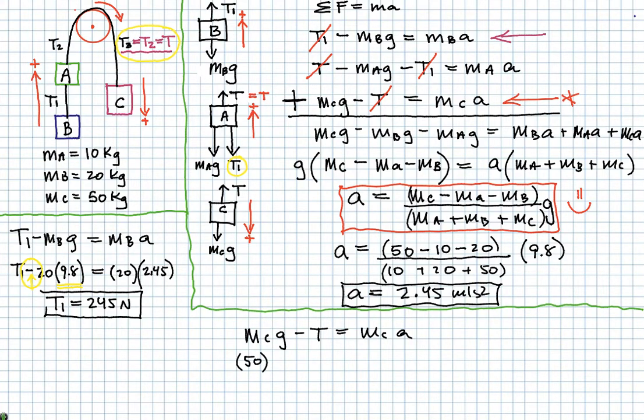50 times 9.8, remember. Okay. Not negative 9.8. 9.8 because we have the minus over there. We've talked about that already. T is equal to 50 times 2.45. Okay. Not zero. It's 2.45 because the entire system we see, we calculated to be 2.45.